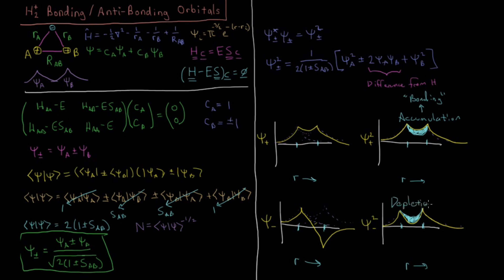In the ψ− state, we have a depletion of density — this is anti-bonding. Electron density is pushed to the outsides, electrons are less attracted to the nuclei in aggregate, the nuclei repel each other more, and the total energy increases relative to two hydrogen atoms. This is an unfavorable situation, and those molecules want to push apart.